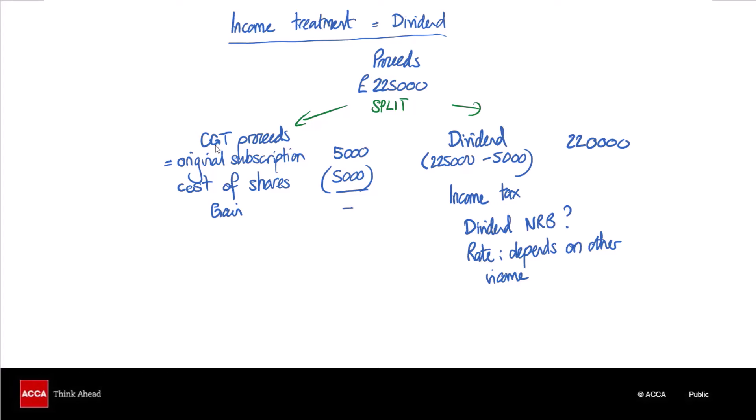The £220,000 dividend is going to be subject to income tax at the dividend rates. We could have the dividend nil rate band depending on whether Kai has any other dividends, and the rate of tax will depend on other income. With an amount of £220,000, at least part of that is going to be at the additional rate of tax for dividends and some at the higher rate for dividends if Kai hasn't already used the higher rate band. Which means that compared to the tax on the gain there is going to be significantly more tax due. Capital gains tax is going to be at 10% because Kai will qualify for business asset disposal relief, which means we can fairly safely say that the capital treatment is better.